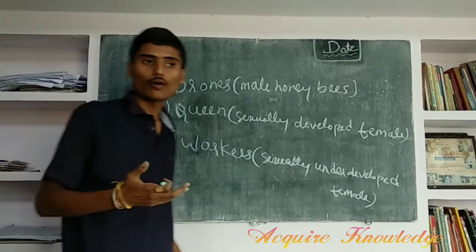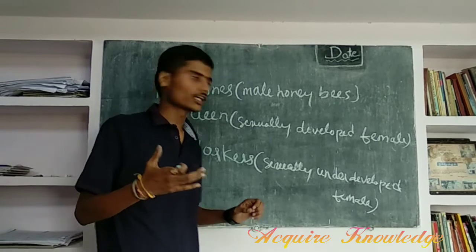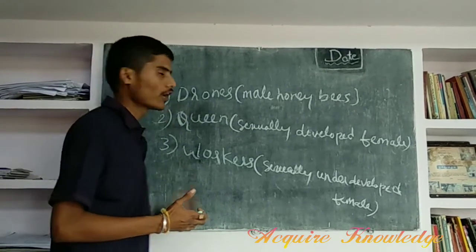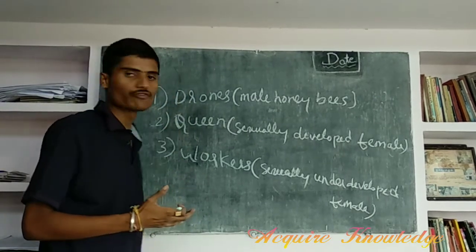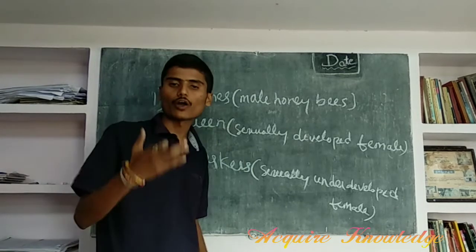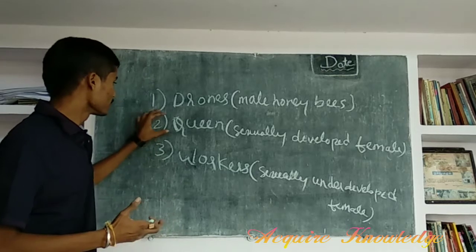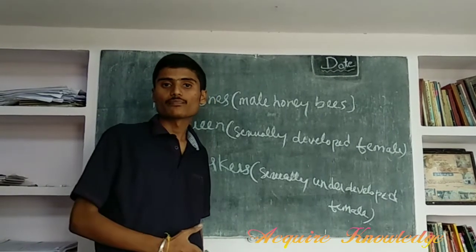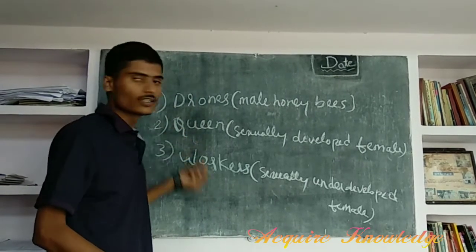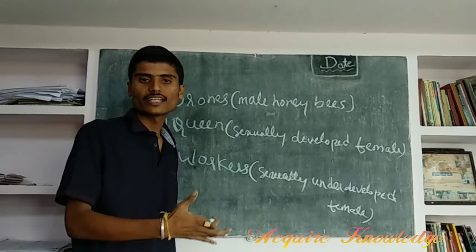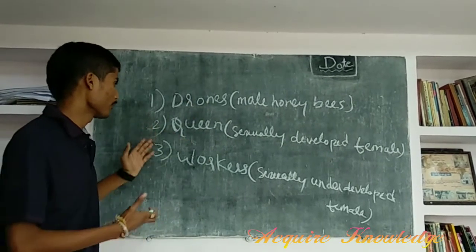How does she motivate the workers? The queen secretes pheromones — pheromones are like a hormone produced from different glands and contain a chemical mixture. By secreting the pheromones, the queen motivates the workers. This is called the queen signal.